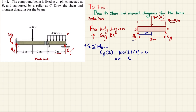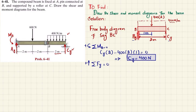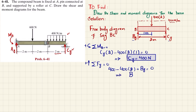From that equation, CY equals 400 Newton. Now using the sum of forces in the Y direction equal to zero, with upward forces positive: BY plus CY minus 800 equals zero. With CY equal to 400, we get BY equal to 400 Newton.